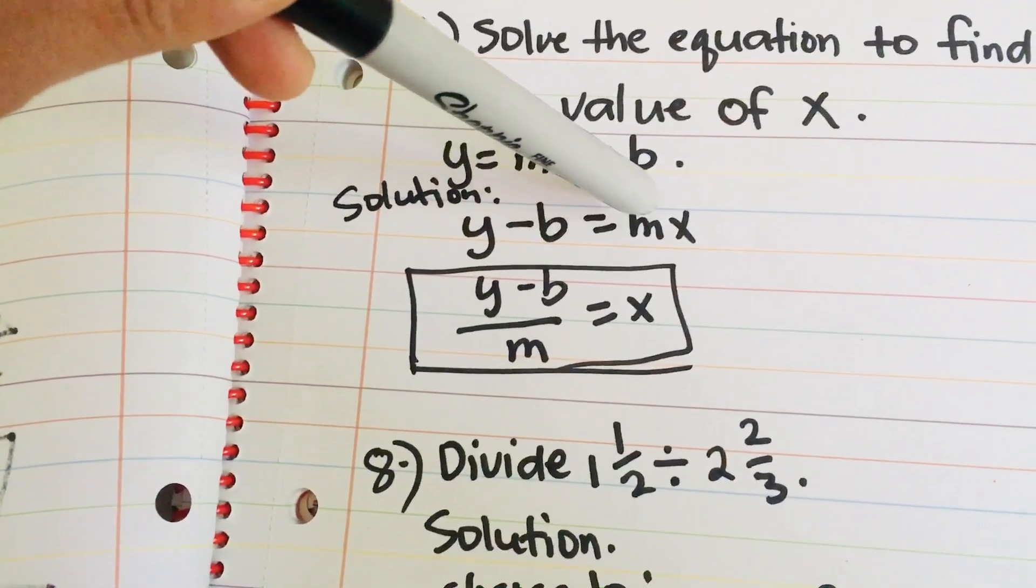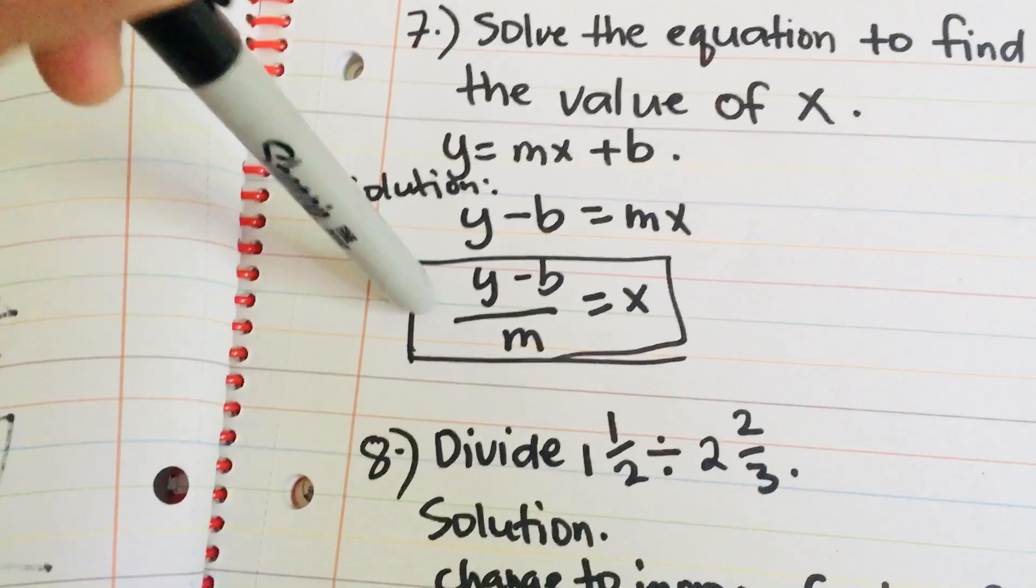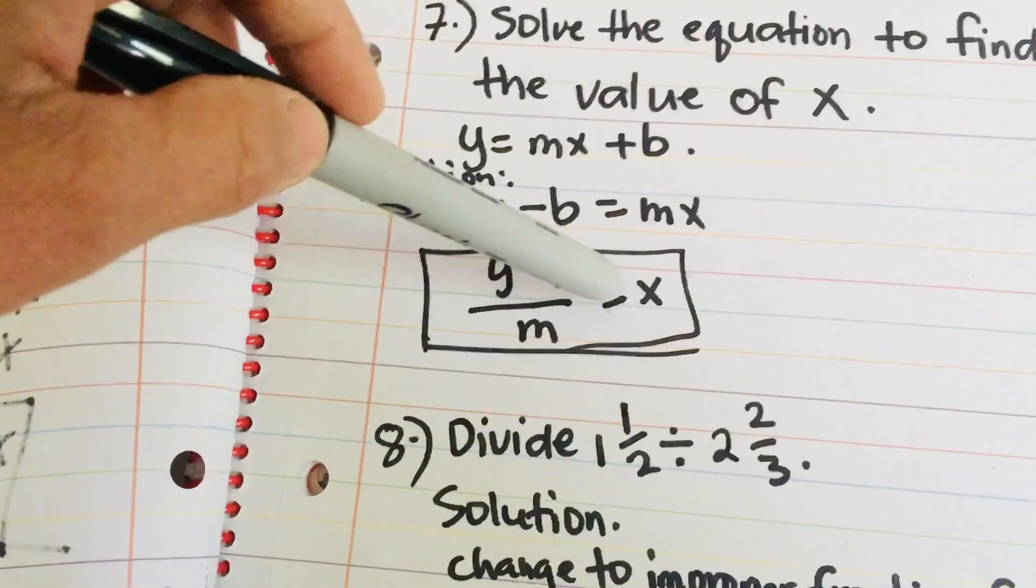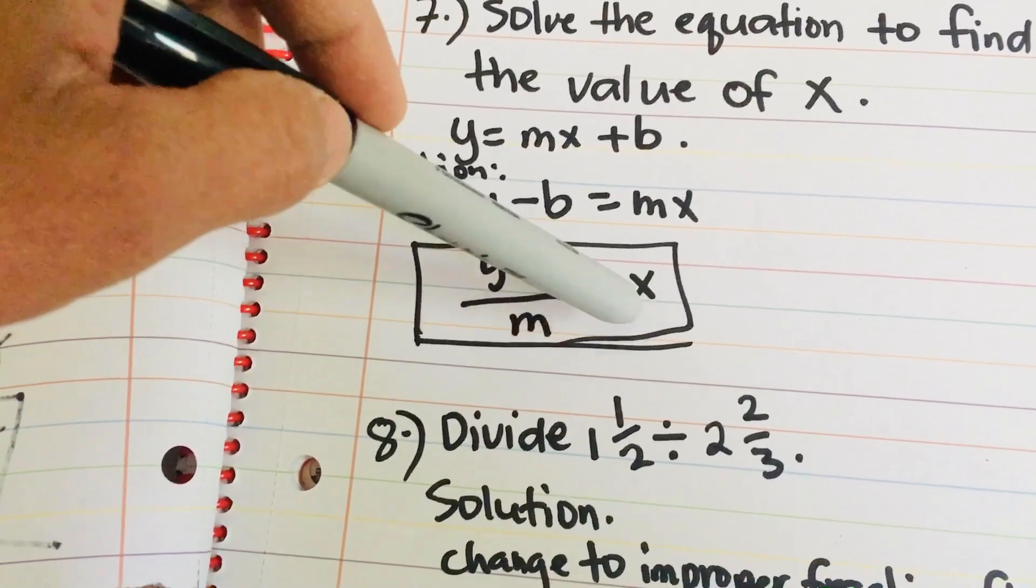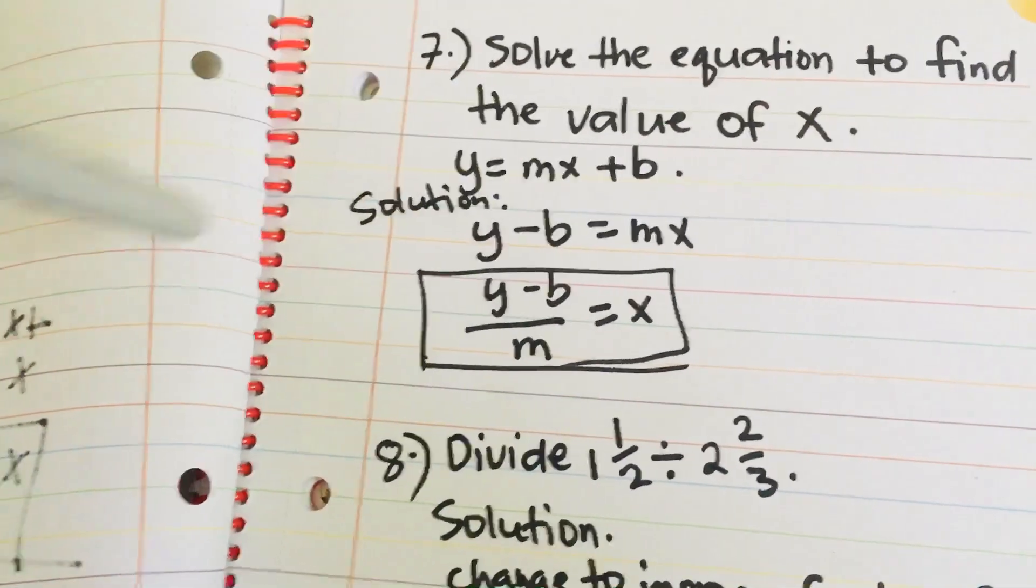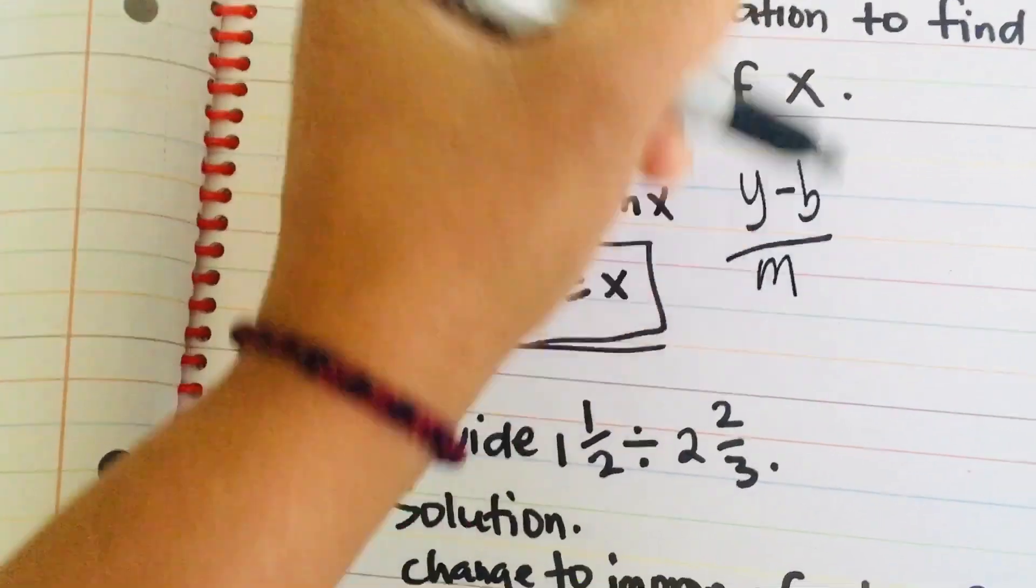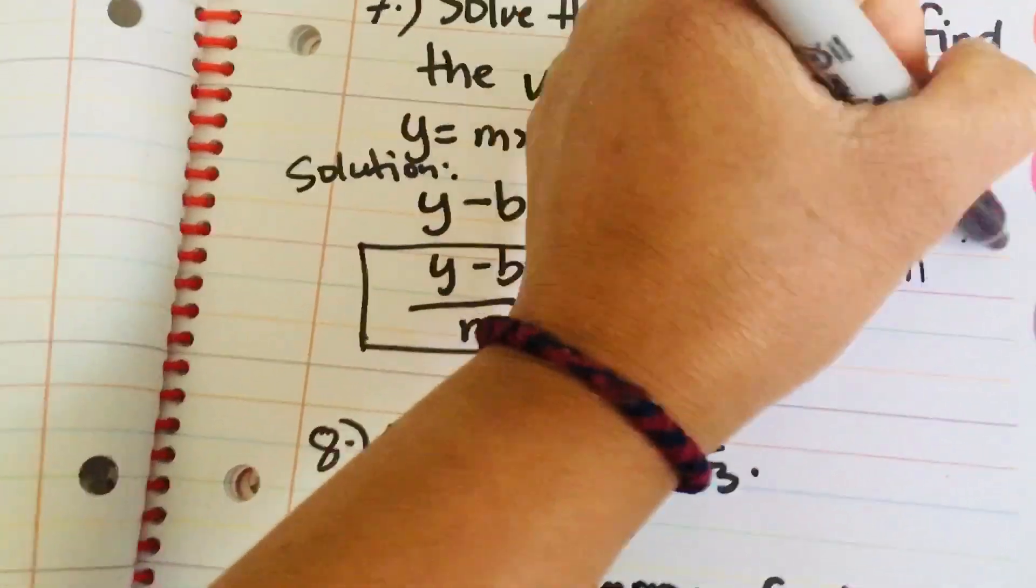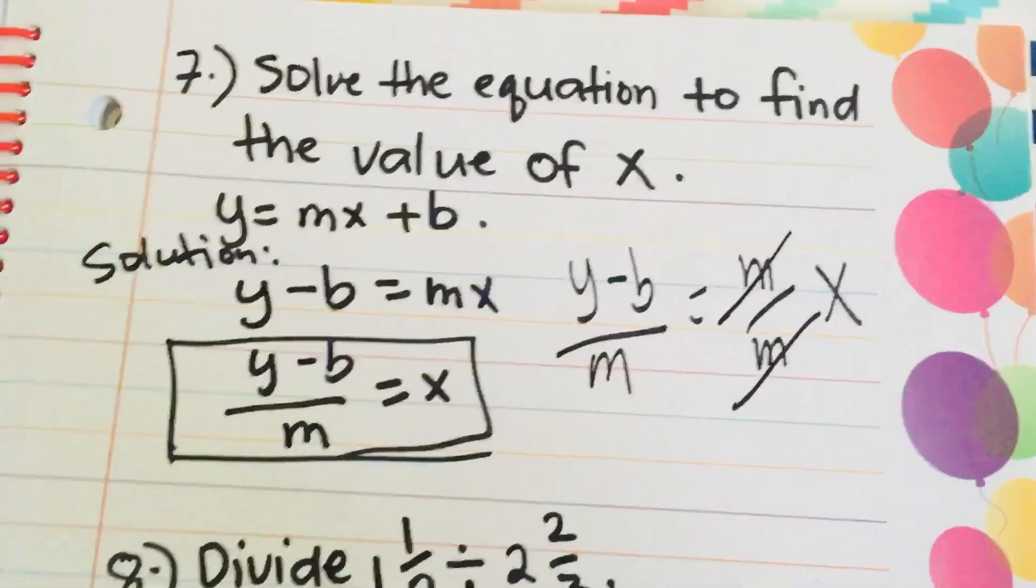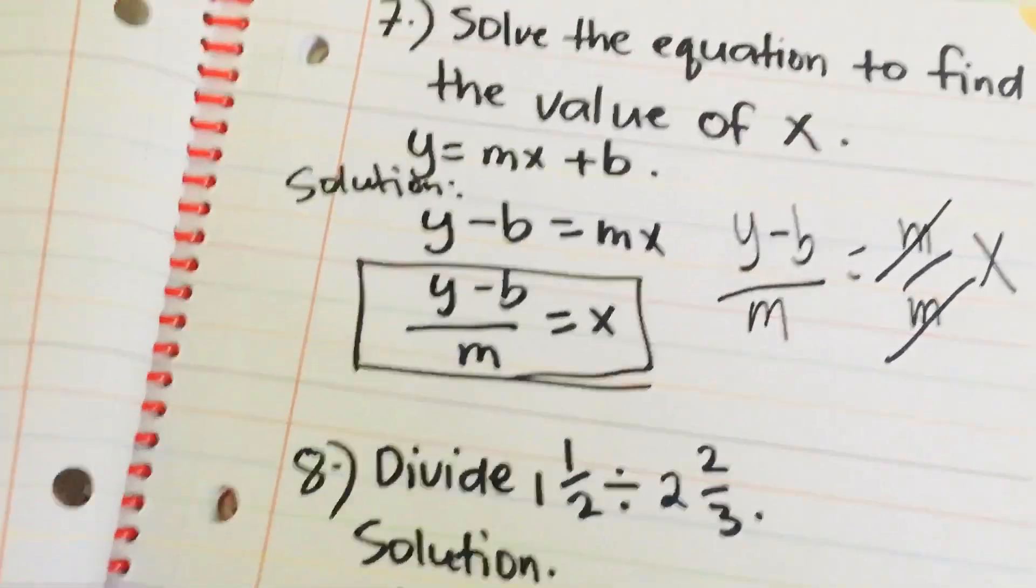Then, in order to be able to obtain just x, you have to divide both sides by m. So, y minus b over m is equal to m over mx. Which is m divided by m is 1 or just x. You divide both sides by m so that what is left is just x. So, now, y minus b over m is equal to x. That's the answer.